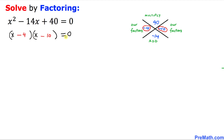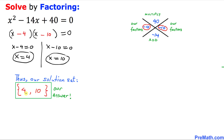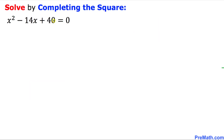Since these two factors equal zero, we separate them: x minus 4 equals zero, and x minus 10 equals zero. That means x equals positive 4 is one of our solutions and x equals positive 10 is our other solution. So our solution set turns out to be {4, 10} and that is our answer.